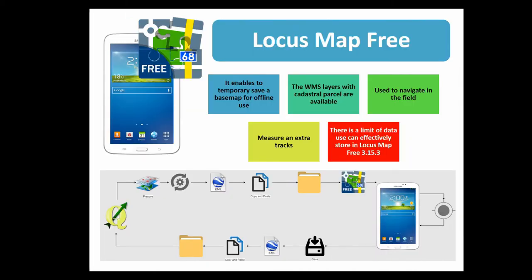Because we could not view the data in the field, we decided to use something to orient ourselves there. I mentioned we had vector data for the entire research area, but the problem was finding a tool that could import all those polygons and easily turn them on after, say, a crash. So we decided to use WMS layers with cadastral parcels, because we could temporarily save them as a base map — and that was enough. We also used that to measure extra tracks, but we did not use it entirely to collect data.